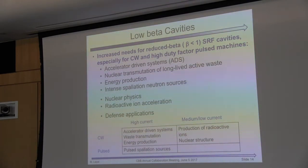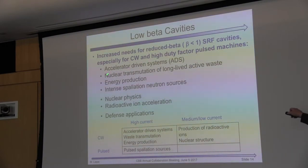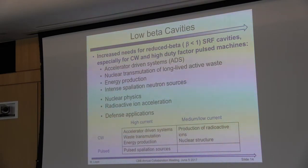These kinds of cavities are used for quite a few machines and different applications. For ion accelerators, for example, in the future maybe accelerator-driven systems — like a nuclear power plant where you use a drive beam to create nuclear reactions, for waste transmutation or energy production. Intense spallation neutron sources all use these cavities, as do nuclear physics and defense applications. So they use more of these fancy-looking low-frequency cavity designs.